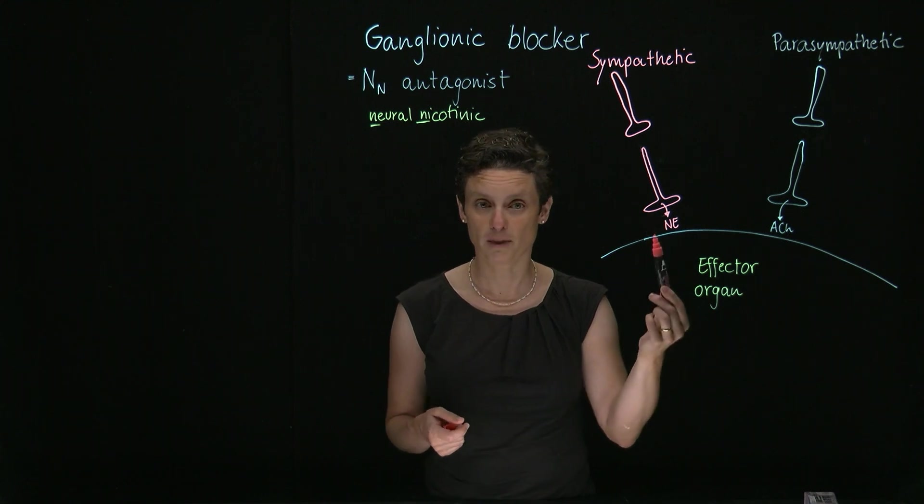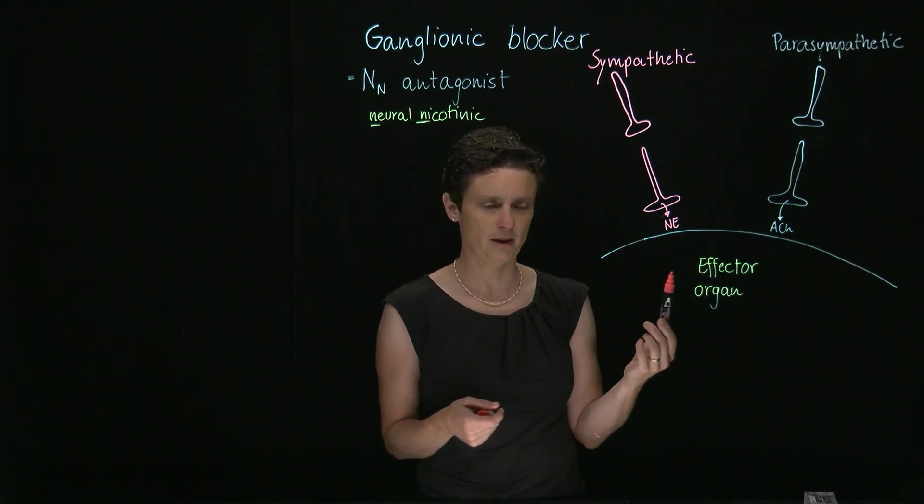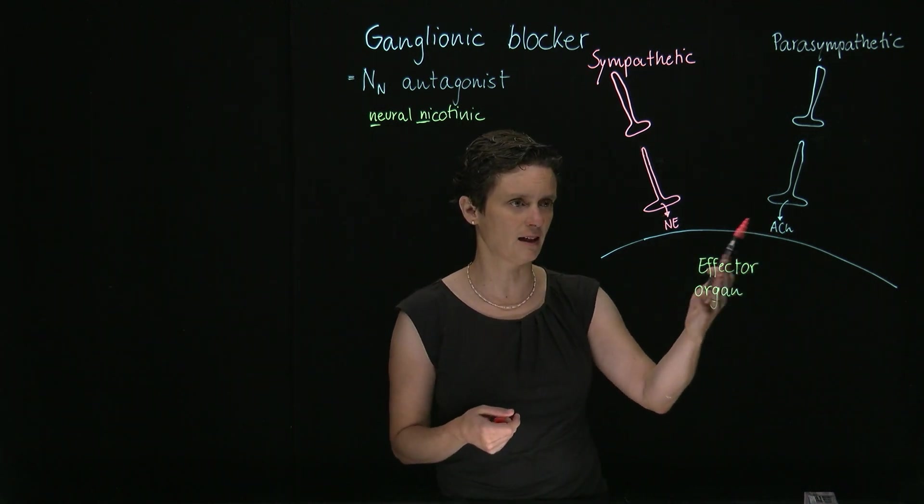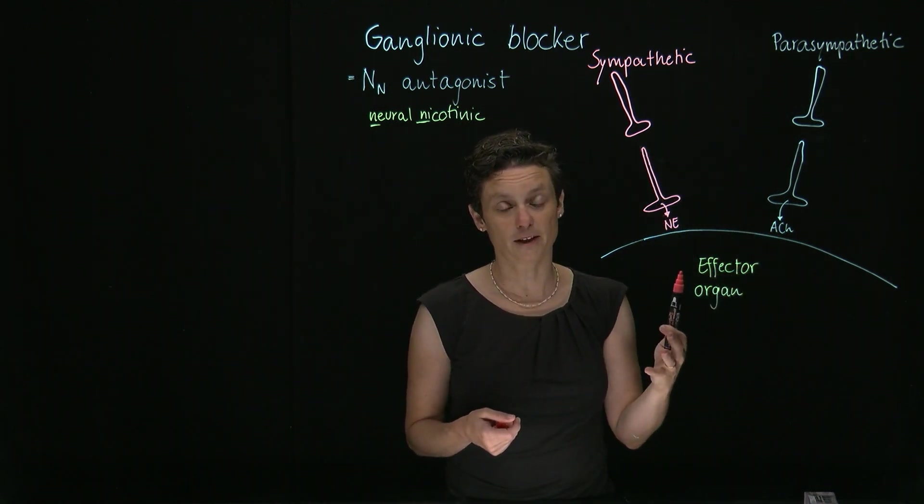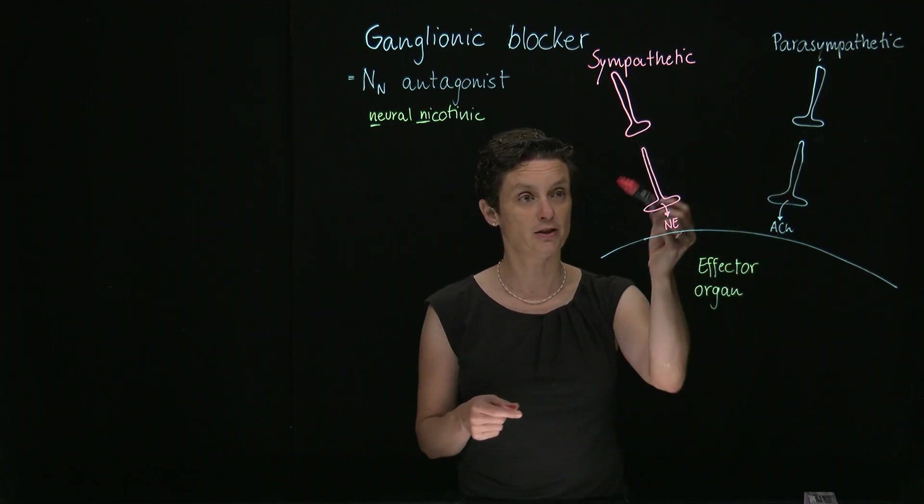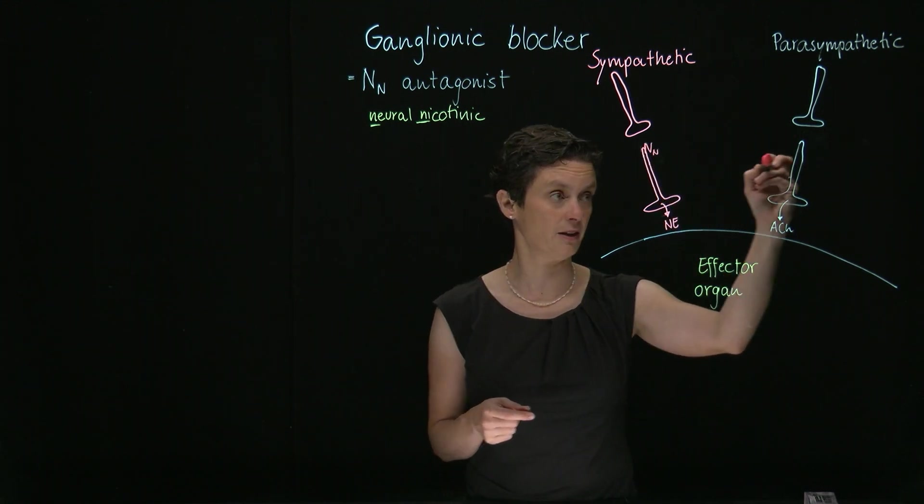It sits on the somers of postganglionic sympathetic and parasympathetic neurons. An effector organ could be the heart, the lungs. A lot of effector organs are under dual control, so they have sympathetic and parasympathetic input. The NN receptors sit right here at the postganglionic neuron.